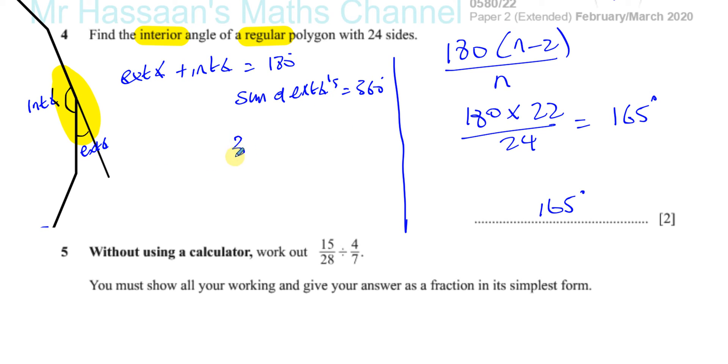So I know that 360 divided by 24 will be the exterior angle in a regular polygon, which is this one. So this is 360 divided by 24, and therefore, I know that this angle, because it makes a straight line with this, it's going to be 180 minus the angle there, so it's 180 minus 360 over 24.